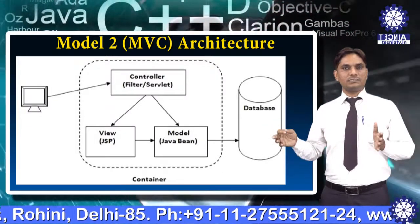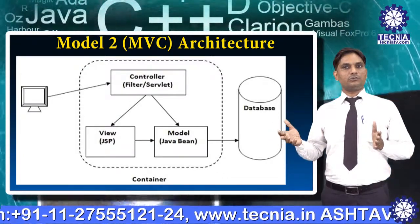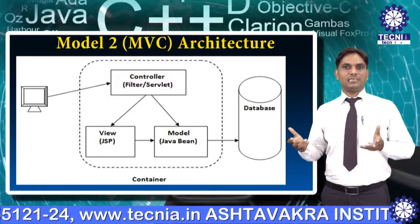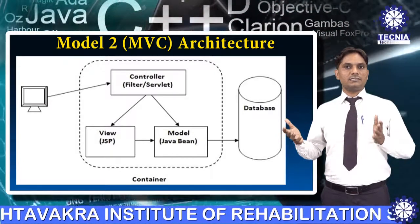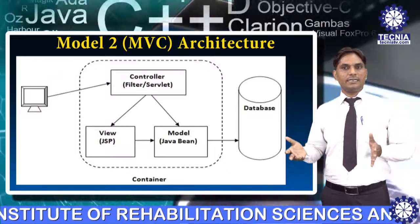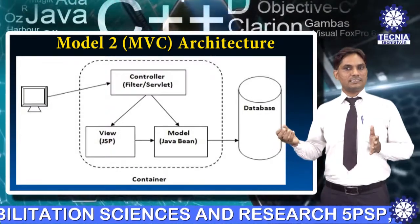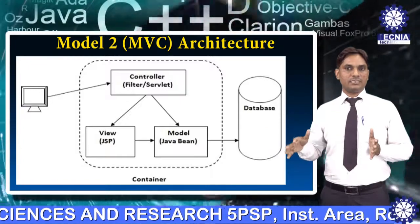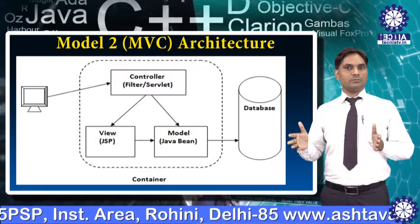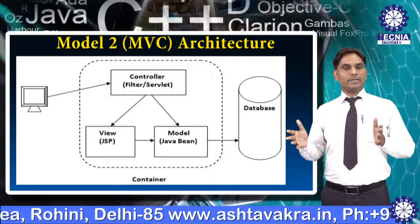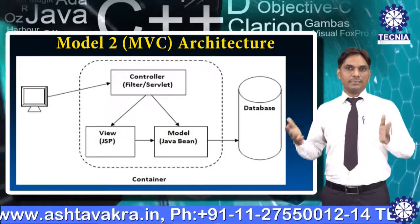In the diagram, the user sends a request to the controller. The controller sends the request to the view. The view accesses the JSP page. The view then sends a request to the model. The model accesses the JavaBean, and JavaBean sends the request to the database. The database accepts the request and sends back a response to the model and controller. The controller sends the response back to the web browser, and the client accesses the web page.